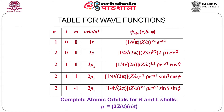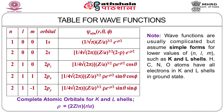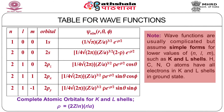We now show the table for wave functions — these are the complete atomic orbitals. The wave functions are usually called atomic orbitals because in quantum mechanics we don't have orbits, we have only wave functions which describe the electron charge distributions. These are called orbitals, as if replacing the idea of orbits in classical mechanics. The complete atomic orbitals for K and L shells are shown, where ρ = (2z/n)·(r/a) and a is the Bohr radius. These wave functions assume simple forms for lower values of n, l, m, such as K and L shells.